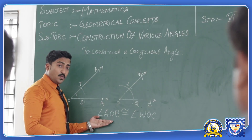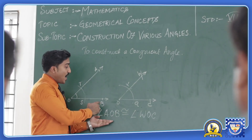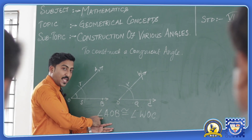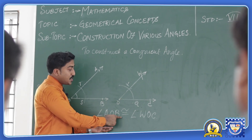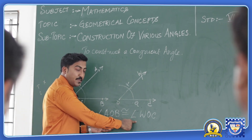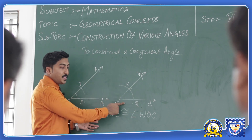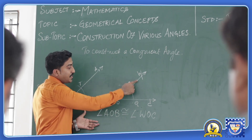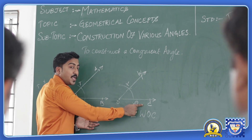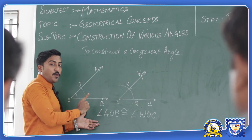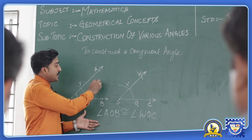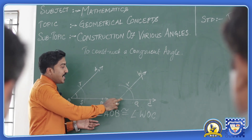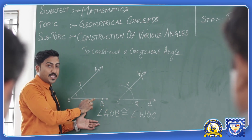After the construction of two angles we have named them as angle AOB congruent to angle WOC, because two angles have been constructed on the basis of the same criteria and the measurements are equal. It is very much important to keep in mind that the labeling should be very much appropriate and the names should be given very accurately.